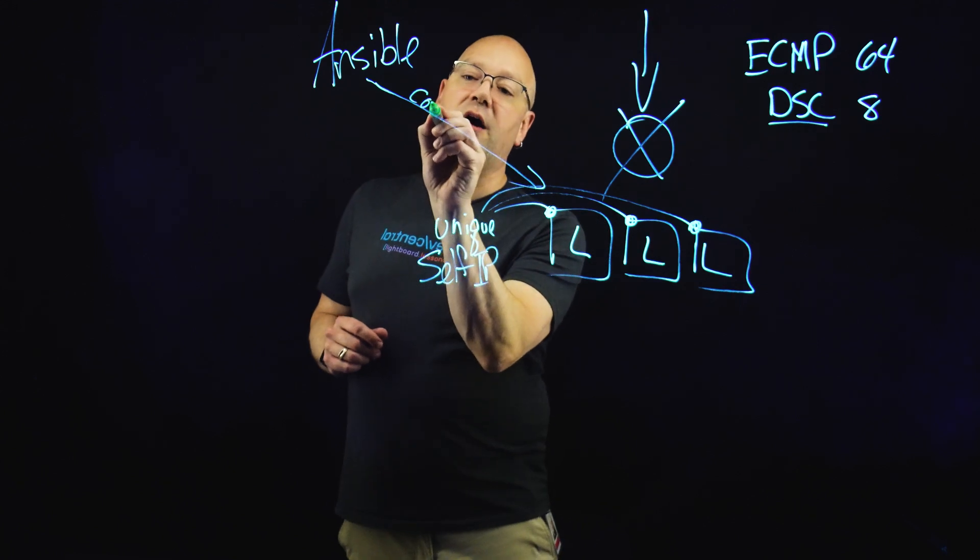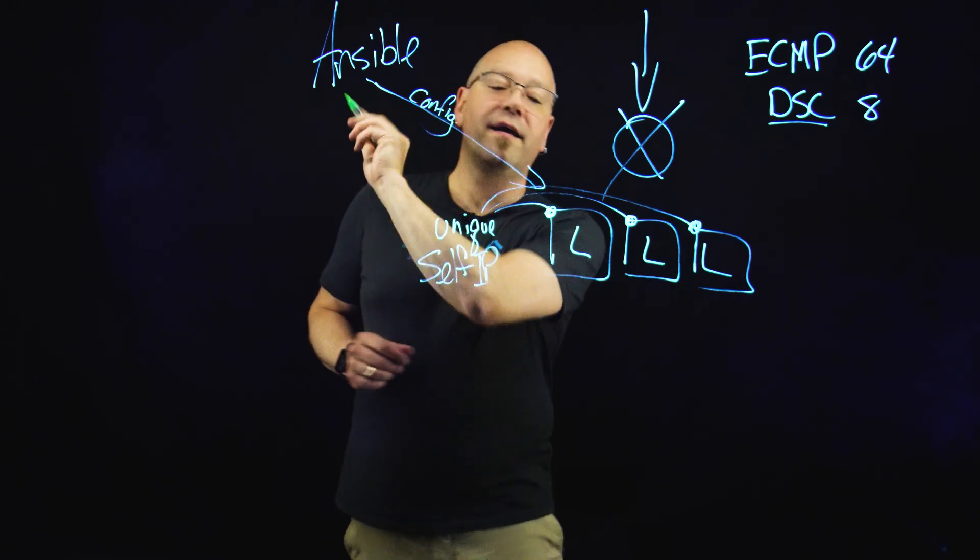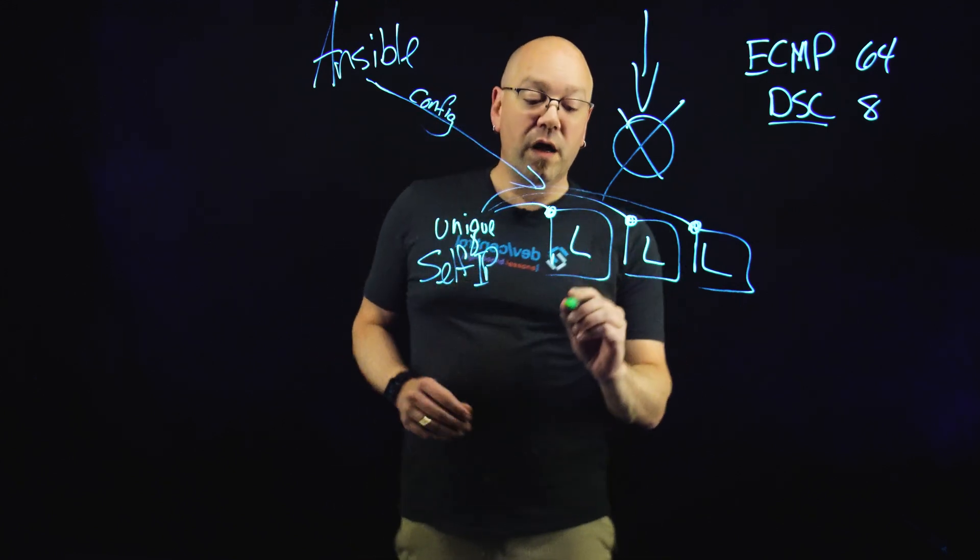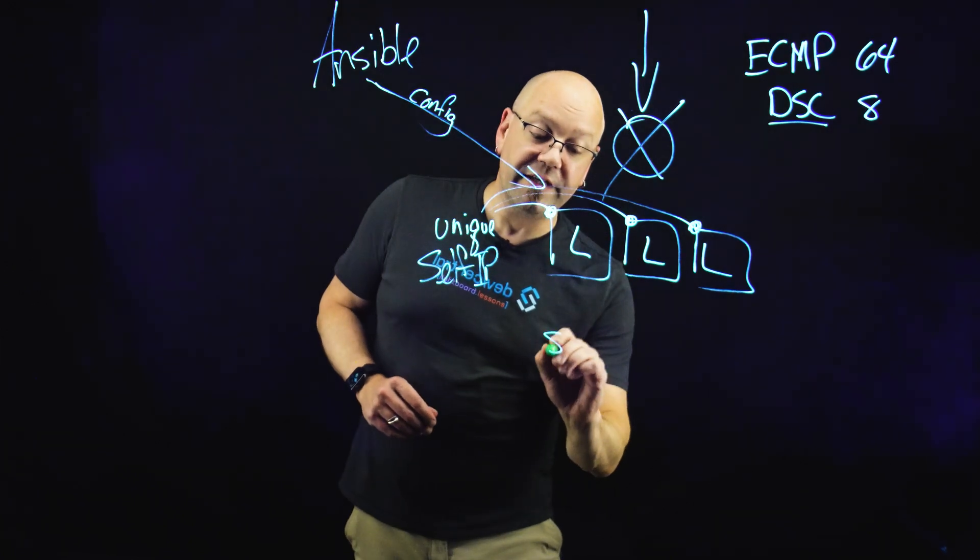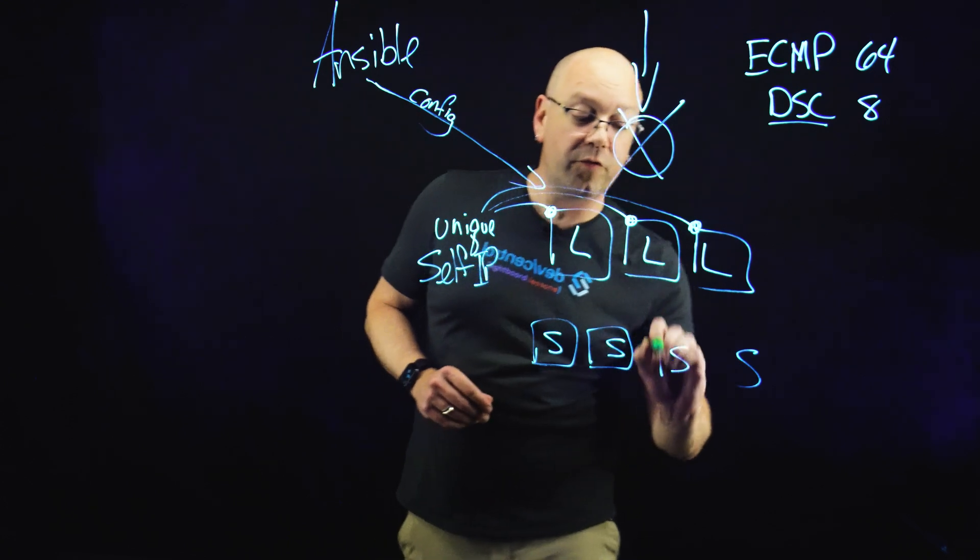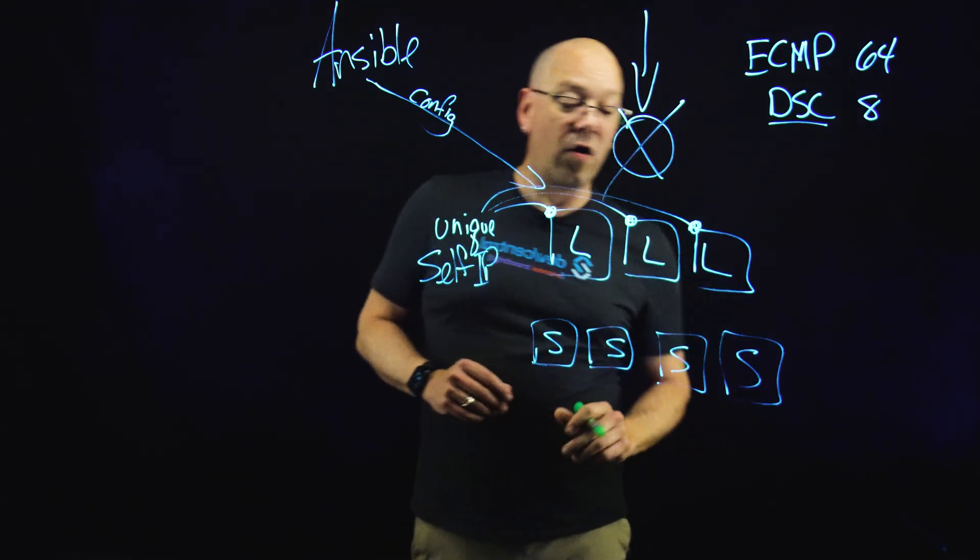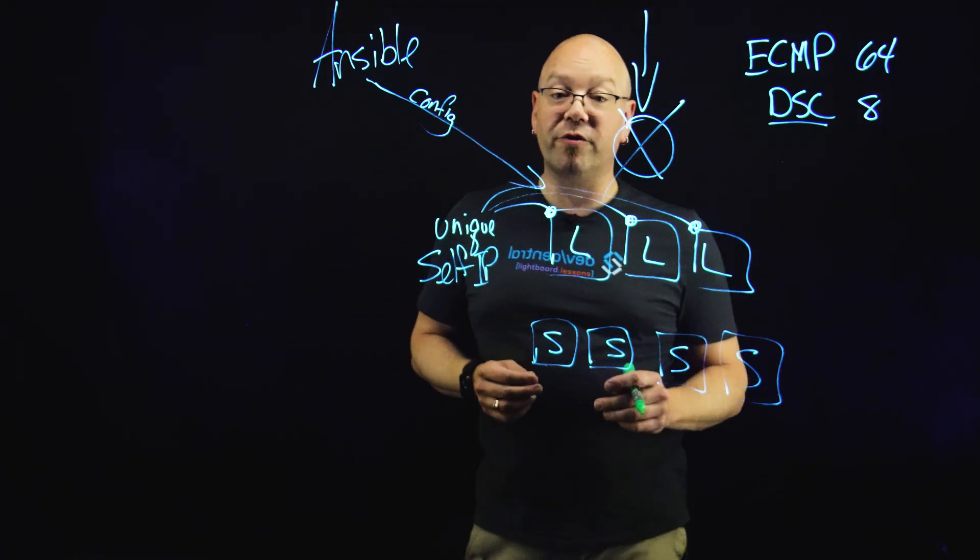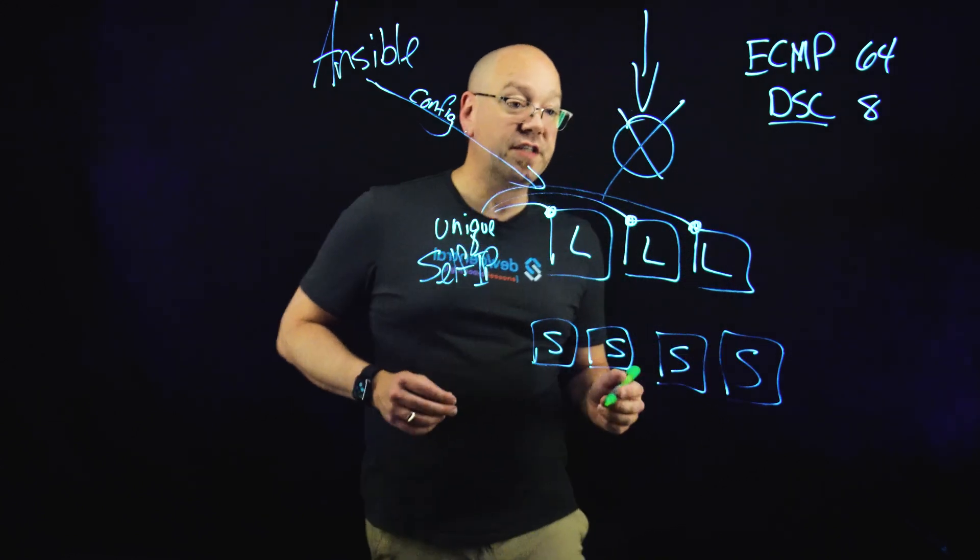And so this would be our config. Now we also have pool members in this environment. So let's say in this example we have four servers that we want to pass traffic through that are all some particular service here.